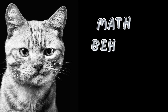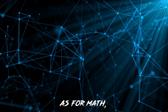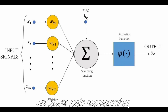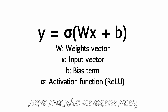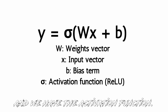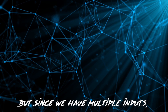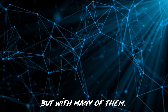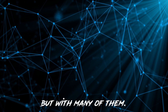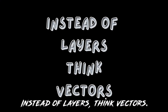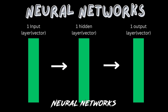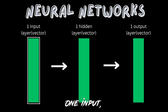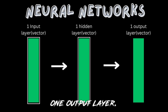Math behind neural networks: for one neuron, we have an expression with the bias or error term and the activation function. Since we have multiple inputs, it's the same idea but with many of them. Instead of layers, think vectors. A neural network has one input, one hidden layer, and one output layer.